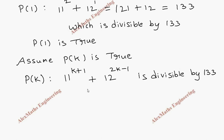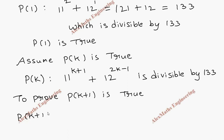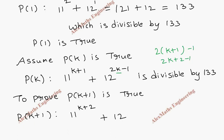Now to prove P(k+1) is true: P(k+1) is 11^(k+2) + 12^(2(k+1)-1). Substituting k+1 gives 2k+2-1, which is 2k+1. So we have to prove 11^(k+2) + 12^(2k+1) is divisible by 133.